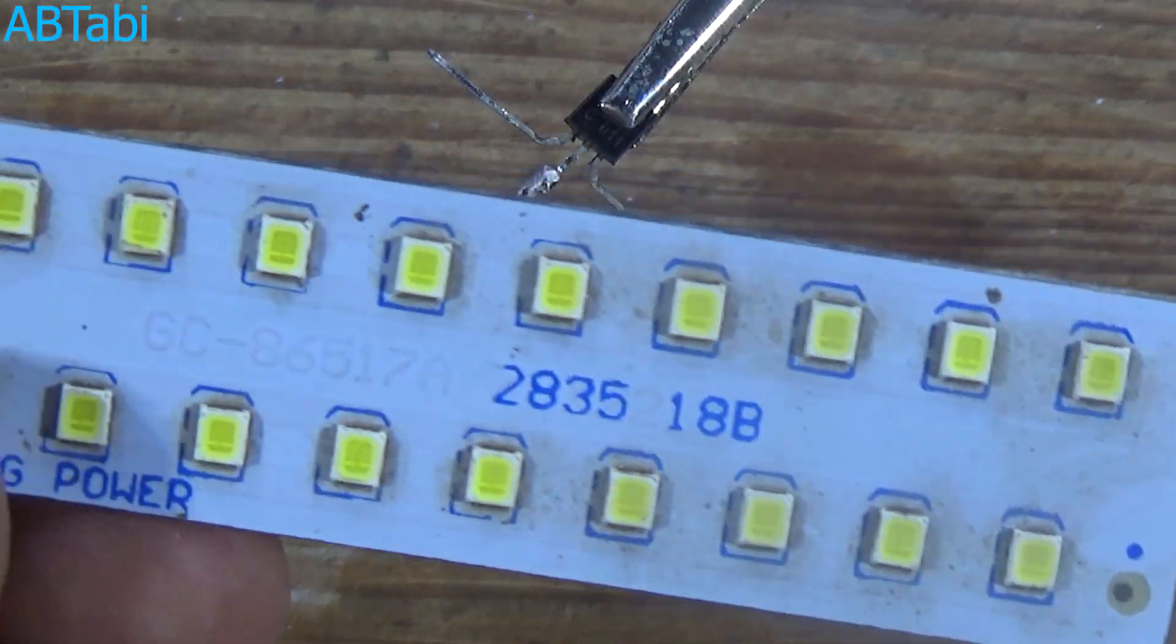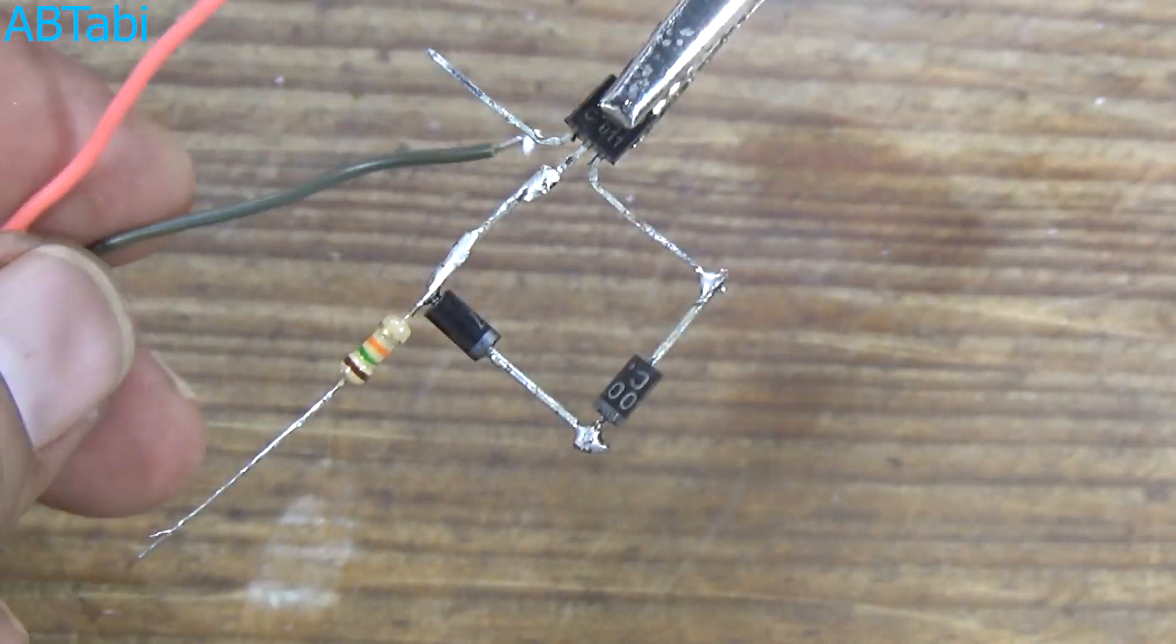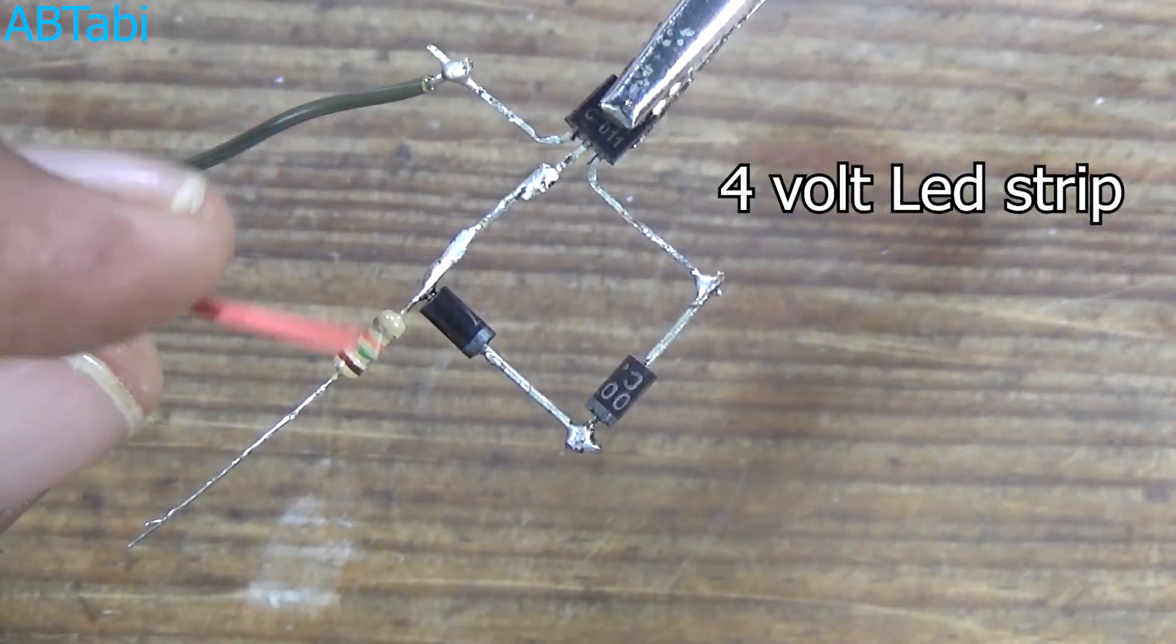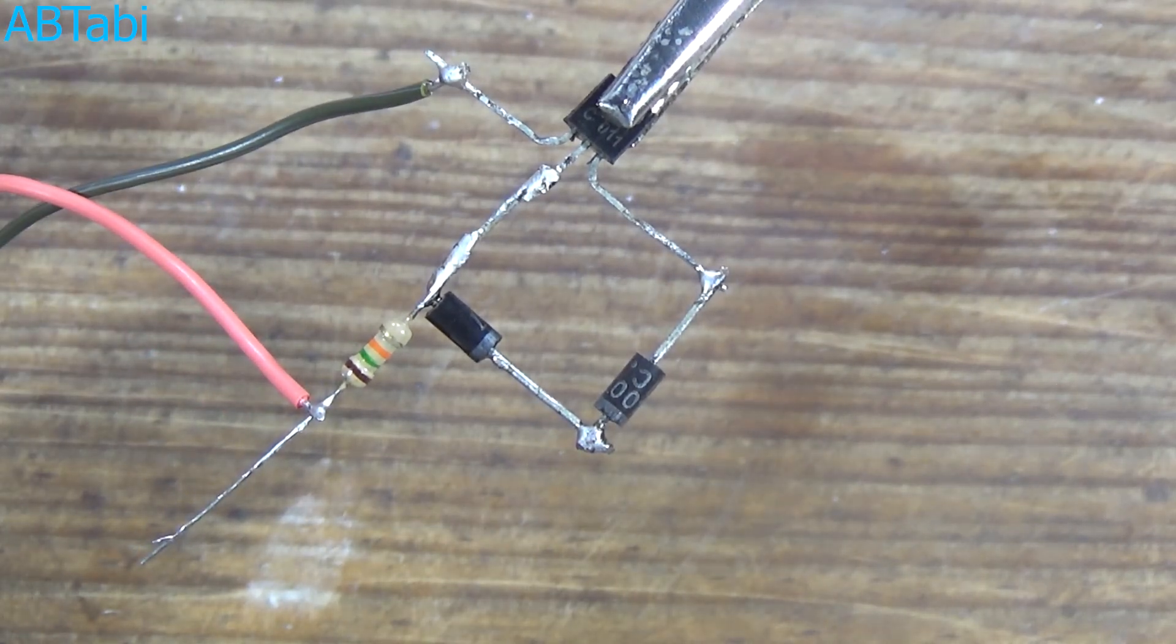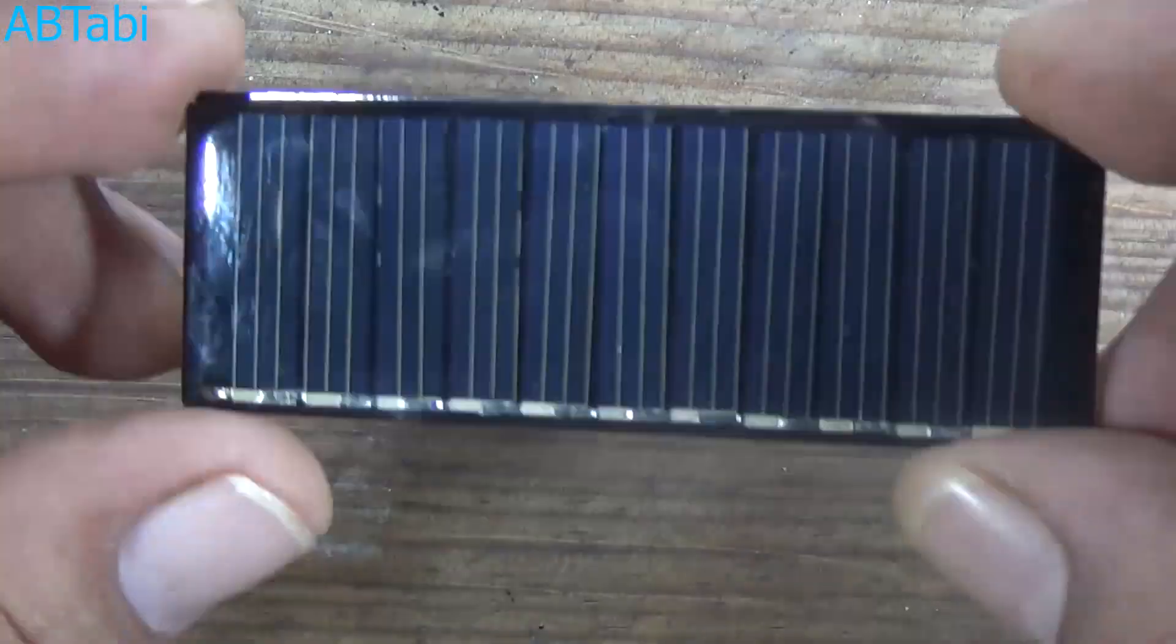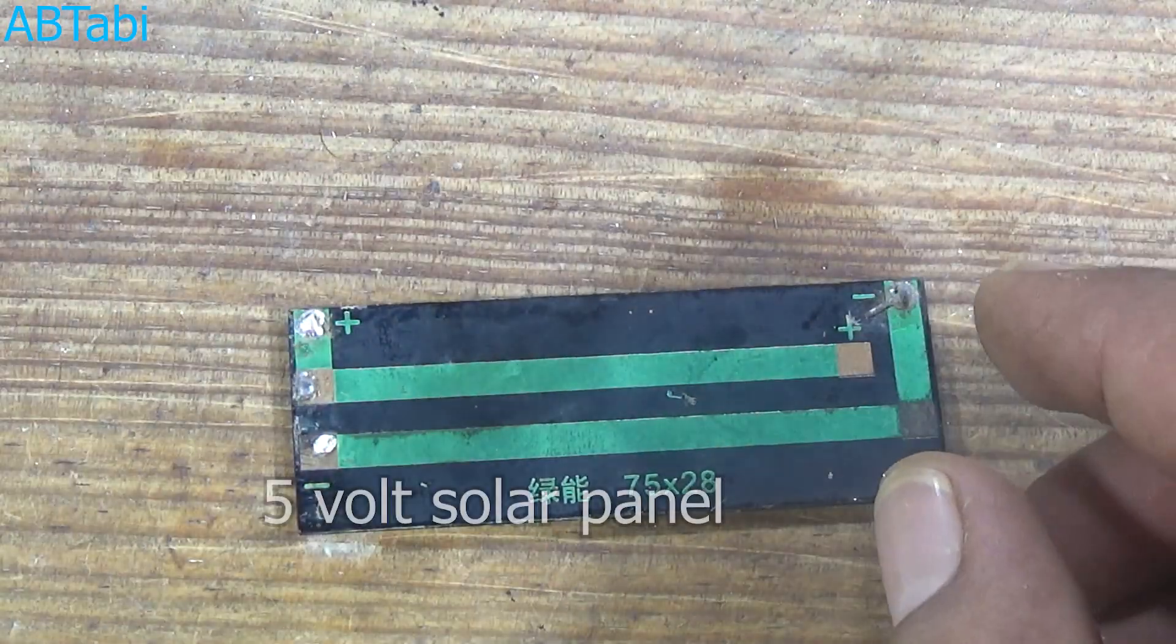One 4 volt LED light strip. LED light strip negative side connects with transistor collector pin, and LED positive side connects with the 1 5k resistance. 5 volt solar panel.